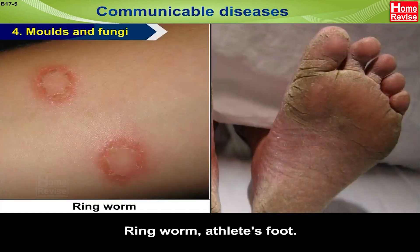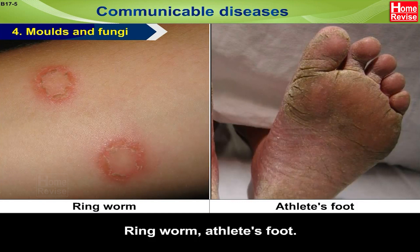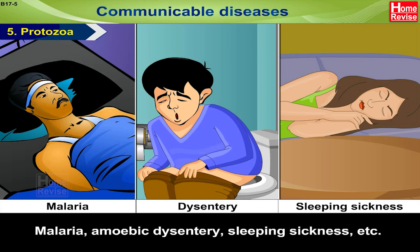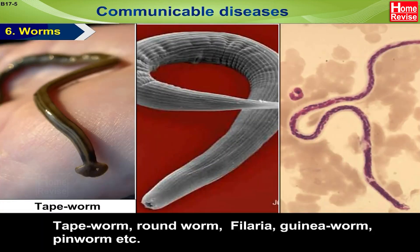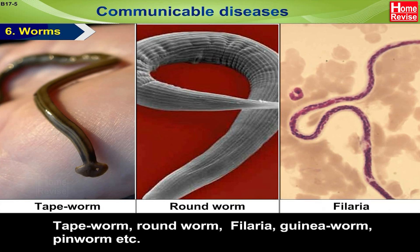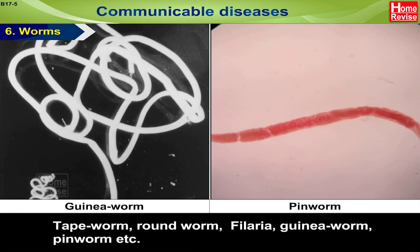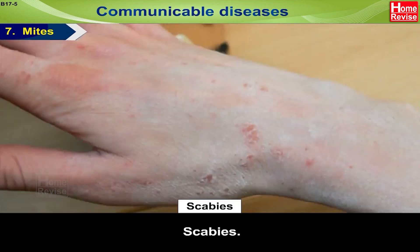Number four — molds and fungi cause: ringworm and athlete's foot. Number five — protozoa cause: malaria, amoebic dysentery, sleeping sickness, etc. Number six — worms cause: tapeworm, roundworm, filaria, guinea worm, and pinworm. Number seven — mites cause: scabies.